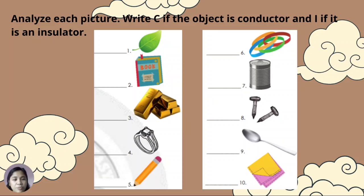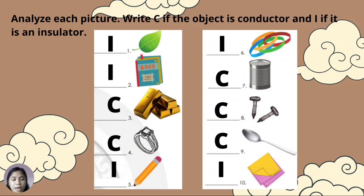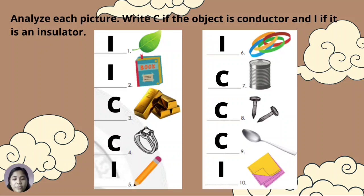Analyze each picture. Write C if the object is a conductor and I if it is an insulator for numbers 1 through 10. These are the correct answers: number 1 — I, 2 — I, 3 — C, 4 — C, 5 — I, 6 — I, 7 — C, 8 — C, 9 — I, and 10 — I.